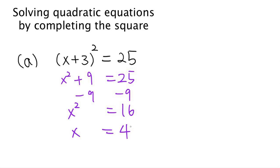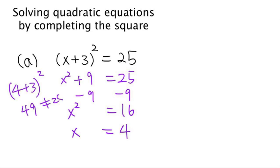But obviously this is not the answer, because if you plug that in, then we have 4 plus 3, which is 7, squared is 49. And 49 is not 25. So what went wrong here? What went wrong is that this first step is not the correct way of taking the square of x plus 3.